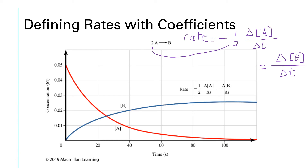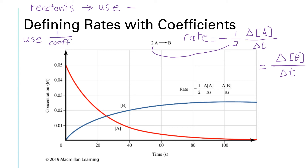Bottom line: for reactants, when we write these expressions, make sure that you use the negative sign, and if you have a coefficient other than one — whether it's a reactant or a product — make sure that you put one over the coefficient out in front of the expression.